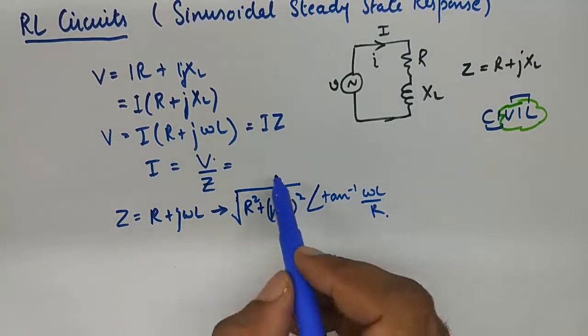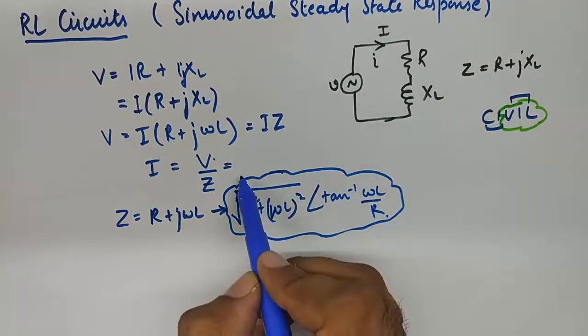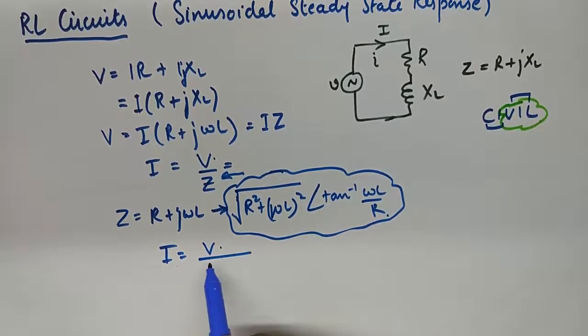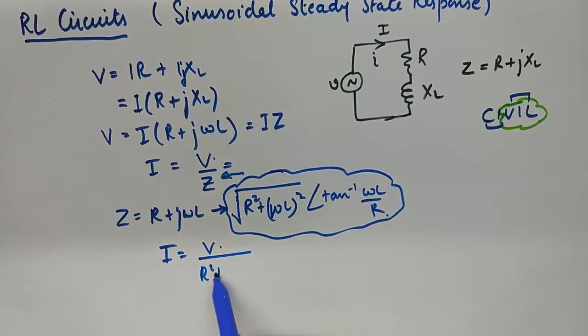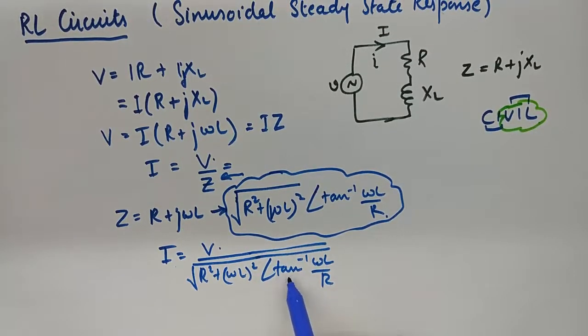So I will put this thing in this equation, which should give me some result: V upon this thing, which is magnitude and angle. Now if I take this angle in the numerator, I get V upon something.